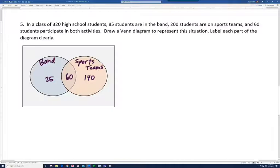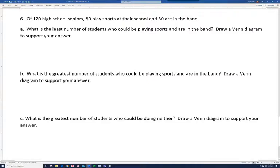And then, in the sports team circle, we know there's a total of 200 that played sports. And there's already 60 in here. So, 60 from 200, that means there's another 140 in the sports team circle in this region here. And finally, let's see, there's 320 students total. And if you add up all the numbers in here, you've got 60 and 140. That's 200. And another 25 is 225. And when you subtract, you get 95. So, these are the guys that didn't participate in either activity.